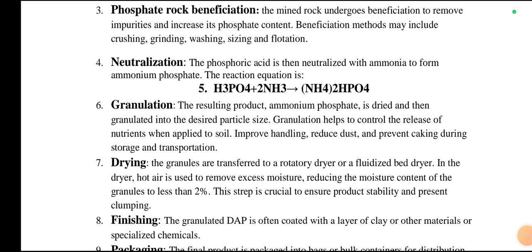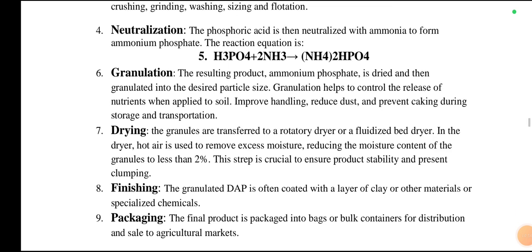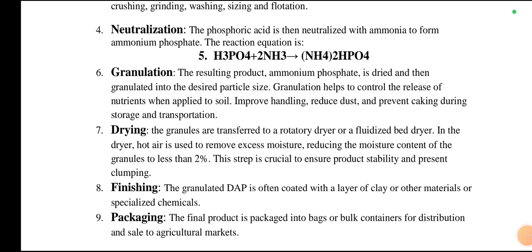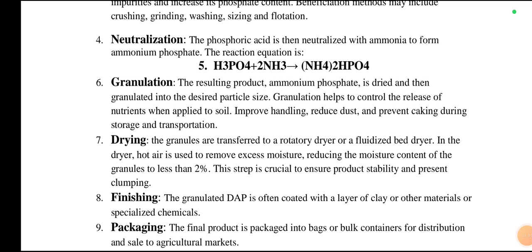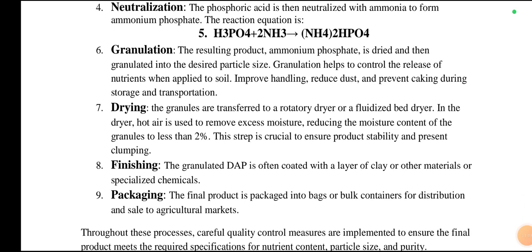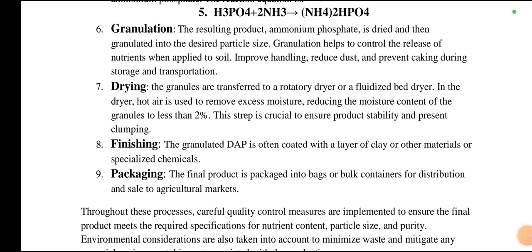The next step is neutralization: phosphoric acid is neutralized with ammonia to form ammonium phosphate. The reaction involves phosphoric acid reacting with ammonia to produce diammonium hydrogen phosphate. Following neutralization is granulation: the resulting ammonium phosphate is dried and then granulated into the desired particle size. Granulation helps control the release of nutrients when applied to soil, improves handling, reduces dust, and prevents caking during storage and transportation.